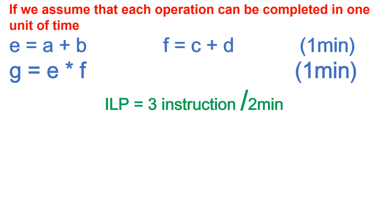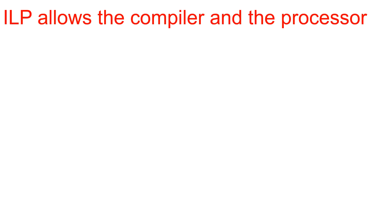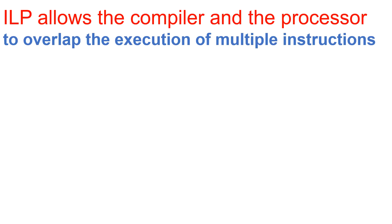The ILP rate is three instructions upon two. Instruction level parallelism allows the compiler and the processor to overlap the execution of multiple instructions, so multiple instructions can be executed parallely in the same interval of time.